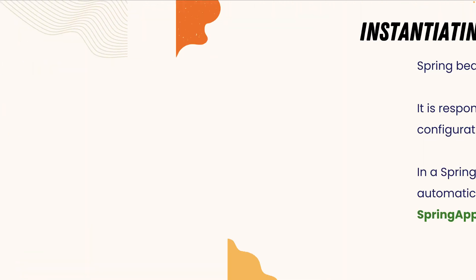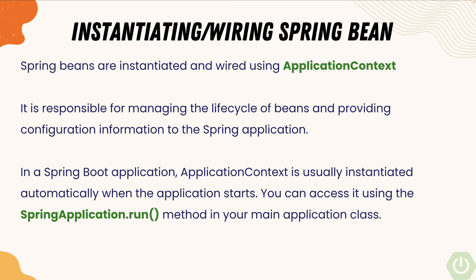We're also going to see how the instantiation and wiring of the Spring Bean happens. Spring Beans are instantiated and wired using the Application Context, which is responsible for managing the lifecycle of the bean and providing configuration information to the Spring application. In a Spring Boot application, the Application Context is usually instantiated automatically when the application starts, and you can access it using the SpringApplication.run() method in your main application class.